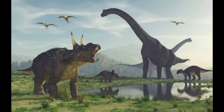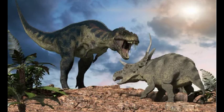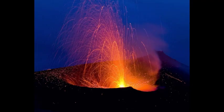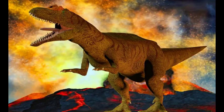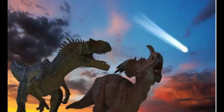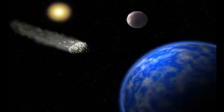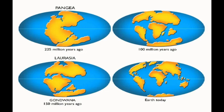Finally, we reach the Cretaceous-Tertiary Extinction, often referred to as the K-T Extinction. This renowned event occurred approximately 66 million years ago and is famously associated with the disappearance of the dinosaurs. A massive asteroid impact on the Yucatan Peninsula led to the release of immense amounts of dust, smoke, and debris, causing a global environmental catastrophe. This event reshaped Earth's ecosystems and paved the way for the rise of mammals, including our own species.